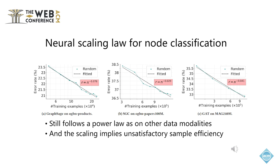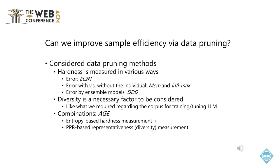Such results motivate us to explore data pruning methods to improve the sample efficiency of training graph neural networks for node classification. Data pruning is a technique used to selectively remove or reduce redundant training examples, thereby improving the efficiency and effectiveness of machine learning models. Intuitively, hard training examples should be kept, as the decision boundary is determined by the support vectors. This intuition has been confirmed for deep models by a recent theoretical study called "Beyond Neural Scaling Laws: Beating Power Law Scaling via Data Pruning."